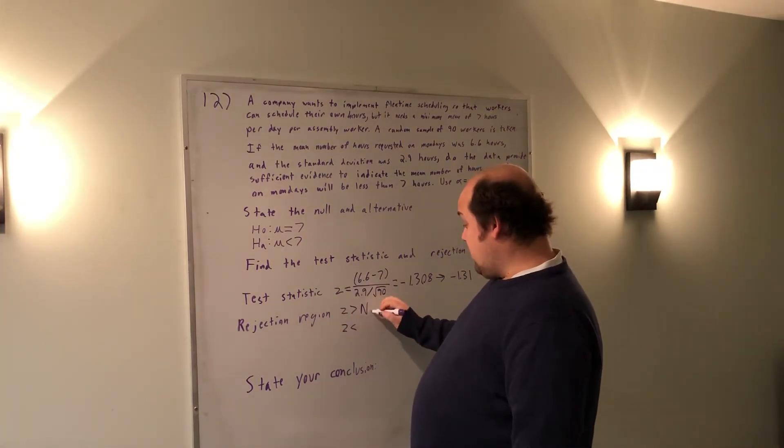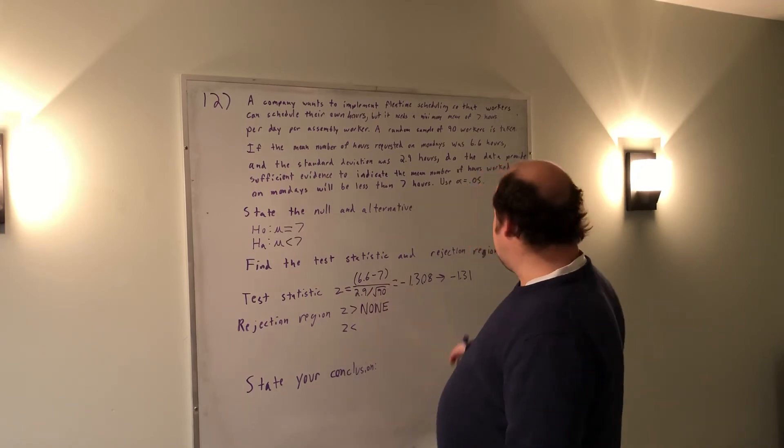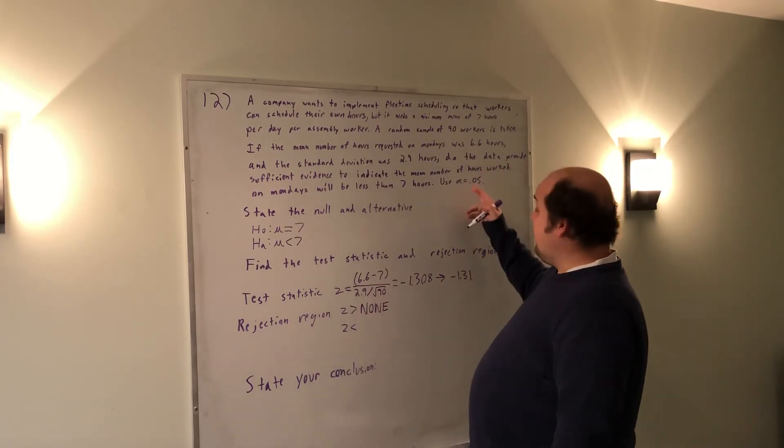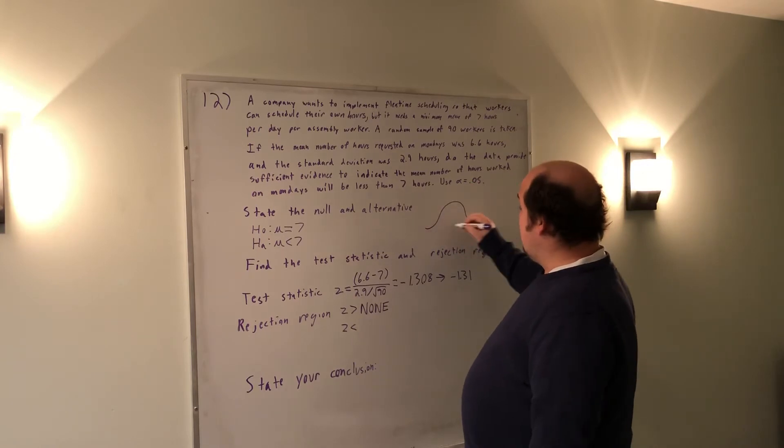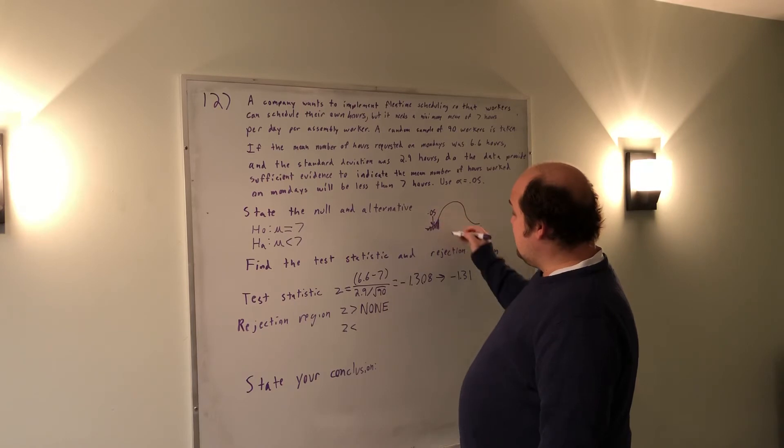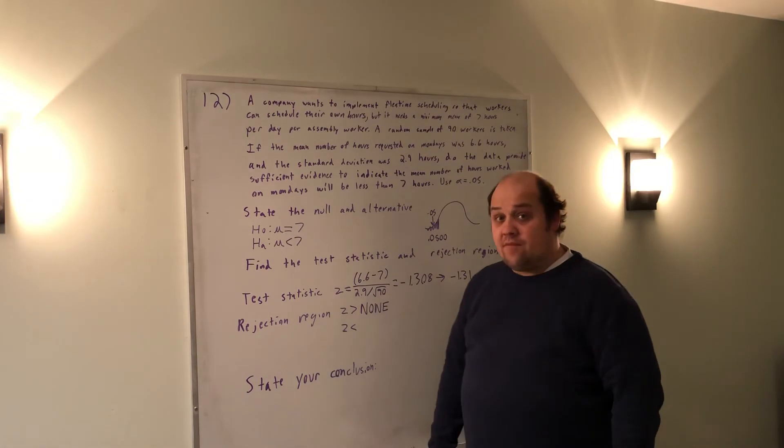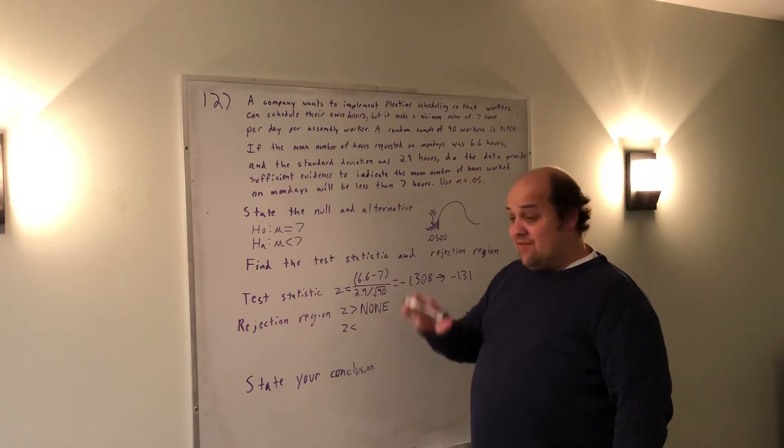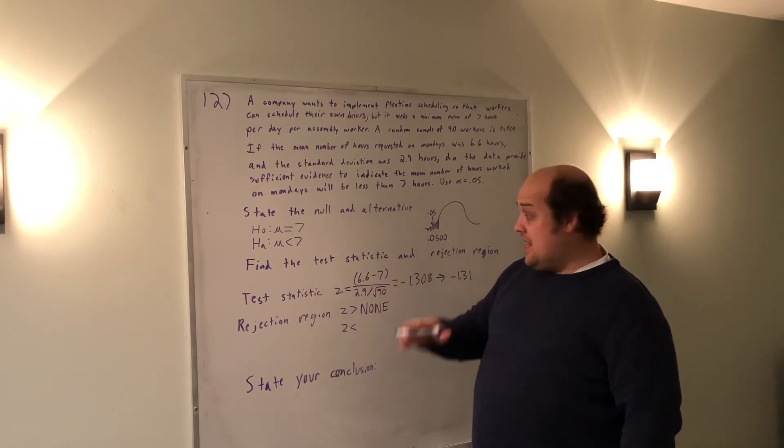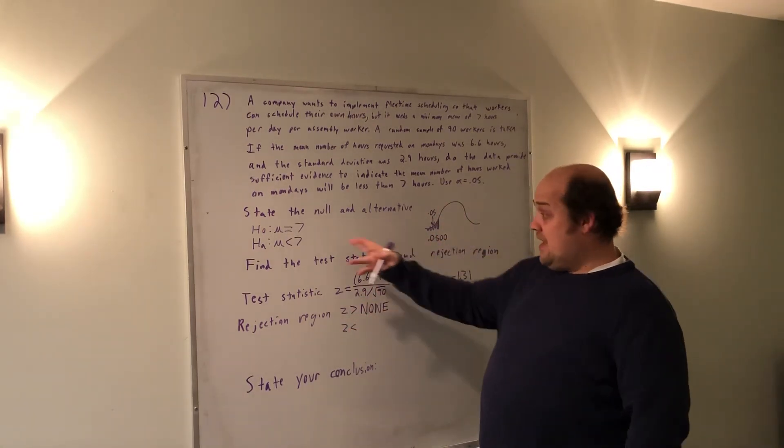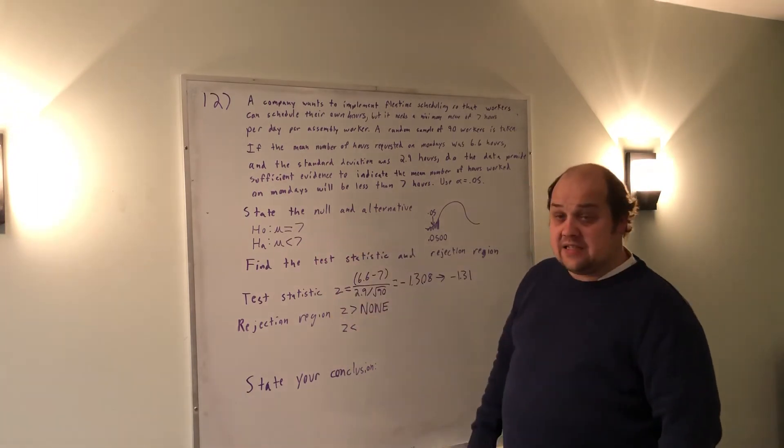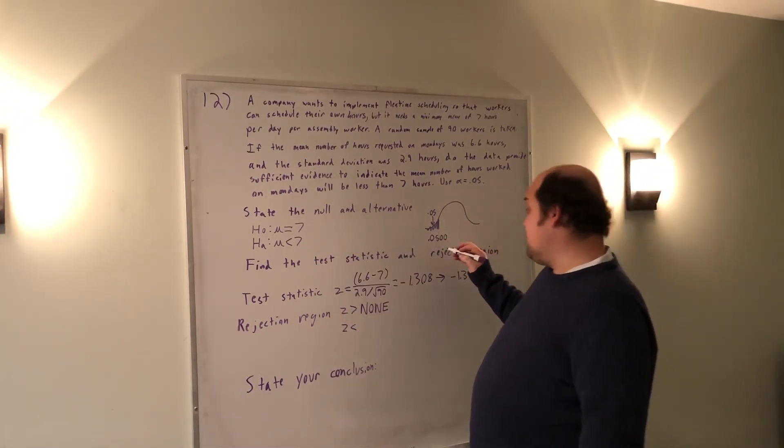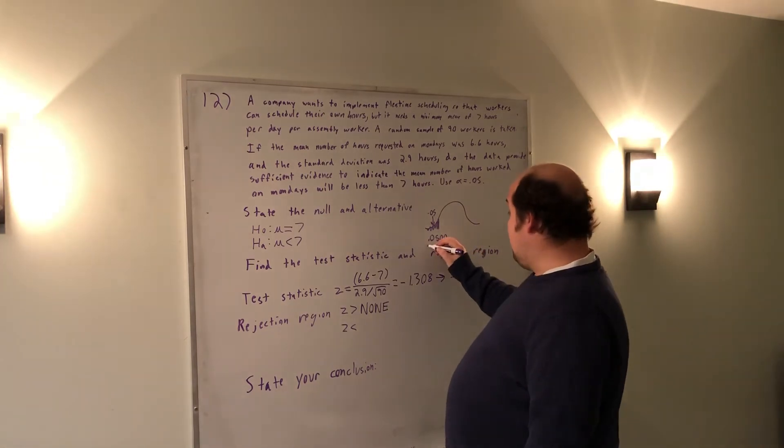Because I have a less than alternative hypothesis, there's only going to be a left-sided region. I want my left-sided region to have alpha equals 0.05, so I'm looking for a situation where there's 0.05 in this shaded region. In other words, I'm looking up 0.0500 in the center of my table. I don't need to do any of this; all I need to do is have that one slide in my notes and then I'll have the answers for any given alpha and any given alternative hypothesis.